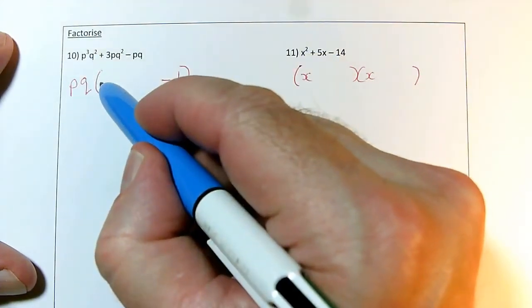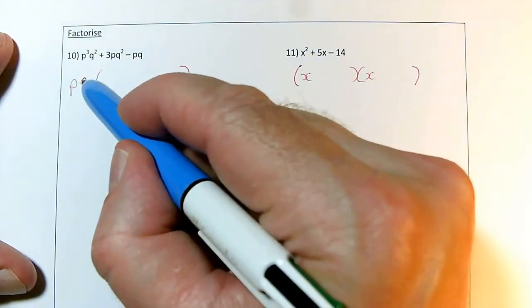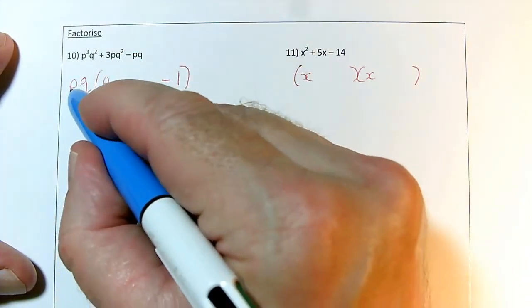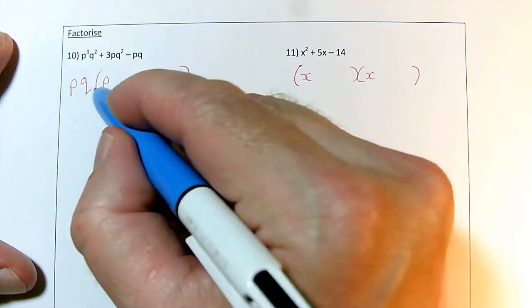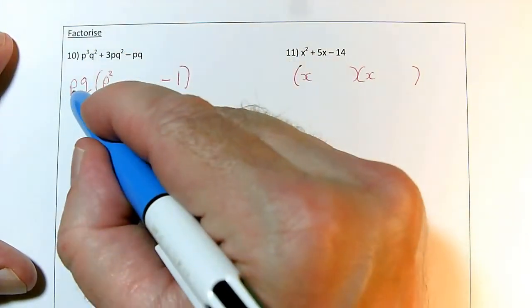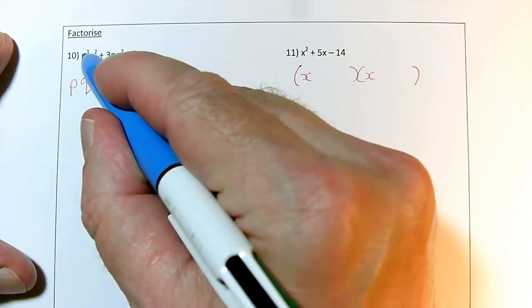At the beginning of the bracket, I need to get p cubed times q squared. So I'm going to need p, but not just p, because p times p would only be p squared. I need p cubed. So this needs to be a p squared. I think that will work. p times p squared will make the p cubed work.